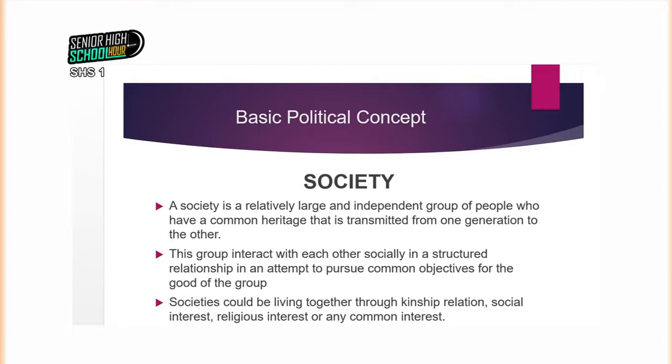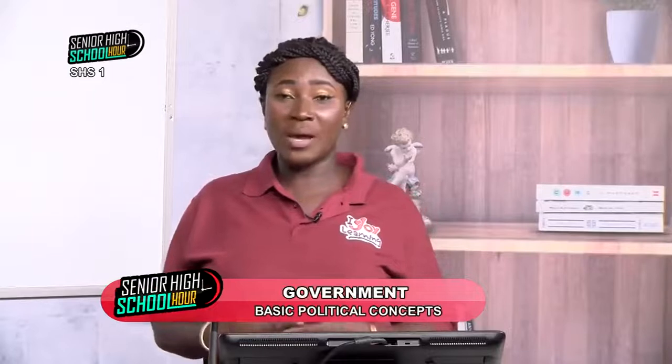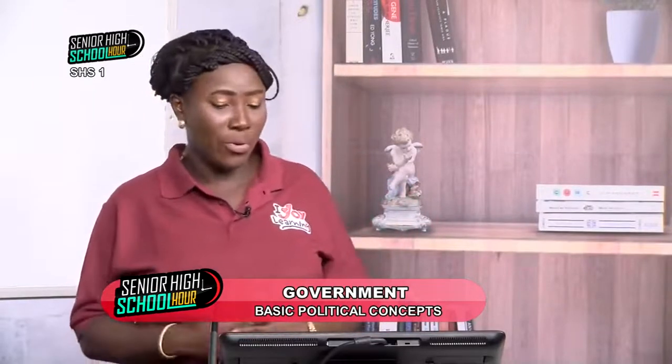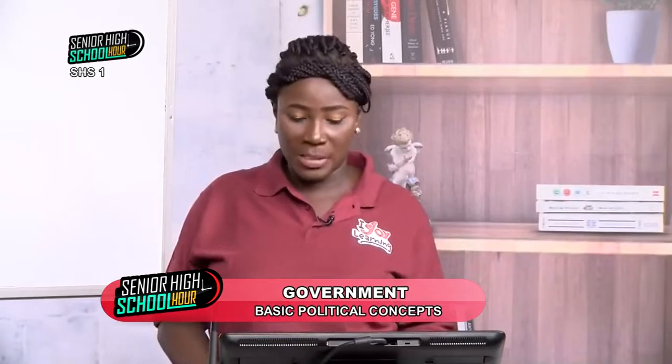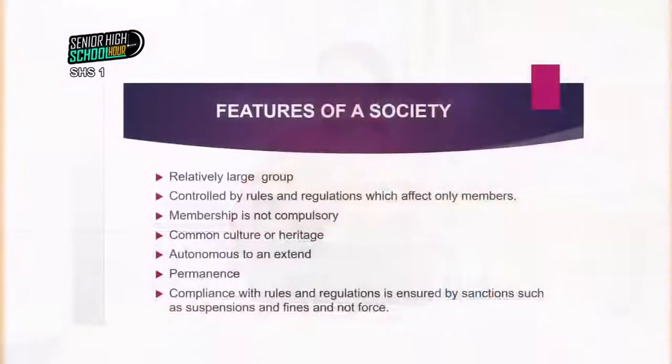Societies could be living together through kinship relations, social interests, religious interest, or any common interest. So when we say a society, we are talking about a group of people largely related through a common heritage, sometimes through social or religious interest or any common interest. We can find such societies in our churches, in the areas in which we live, sometimes even in schools — groups like Girl Child societies, Blue Crescent, Red Cross, and a whole lot of them.